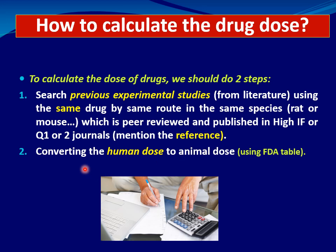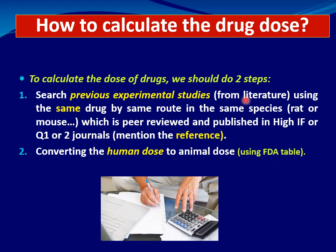Step two: I also check if this drug is available on the market and has a known human therapeutic dose, then I convert the human dose to the animal dose — that is, I find the equivalent dose in the rat — using the FDA table. Now I have two doses: one from the literature and one from human dose conversion.